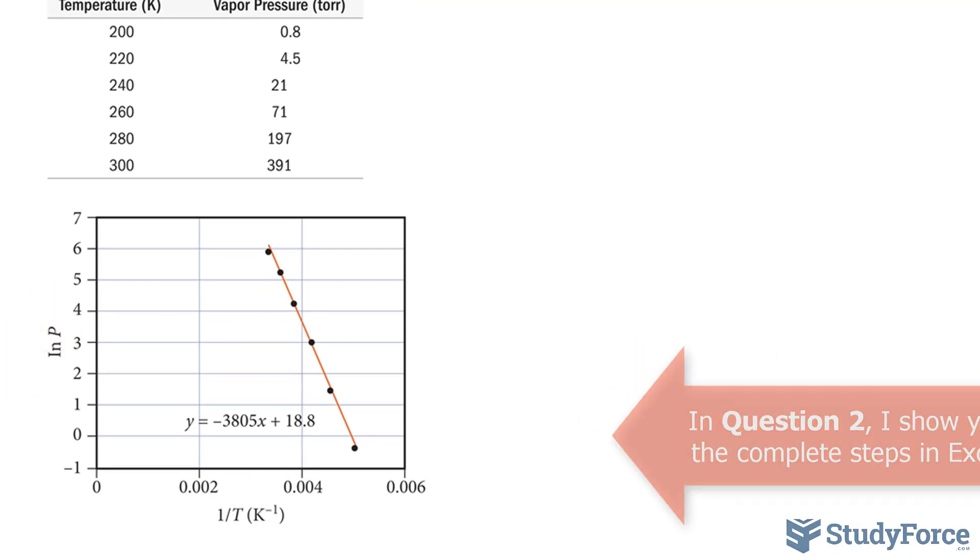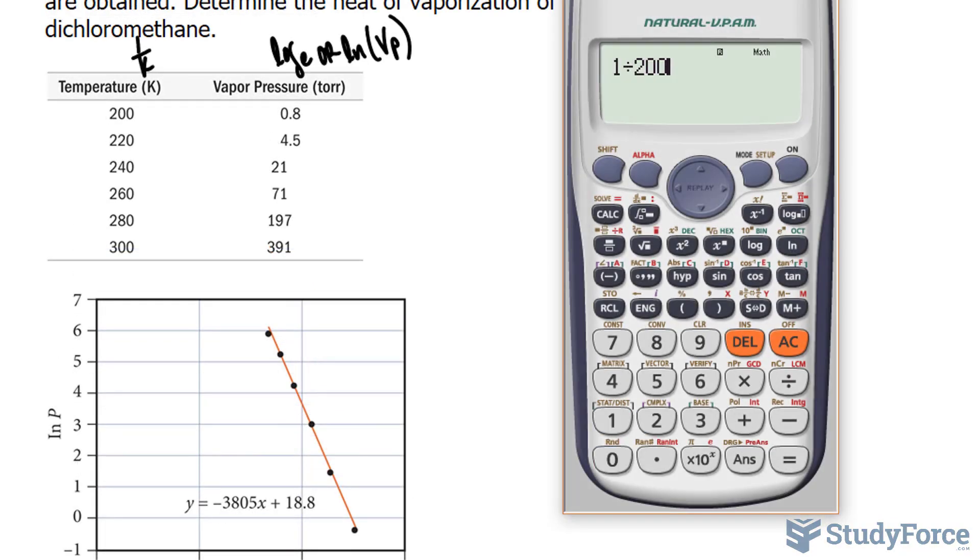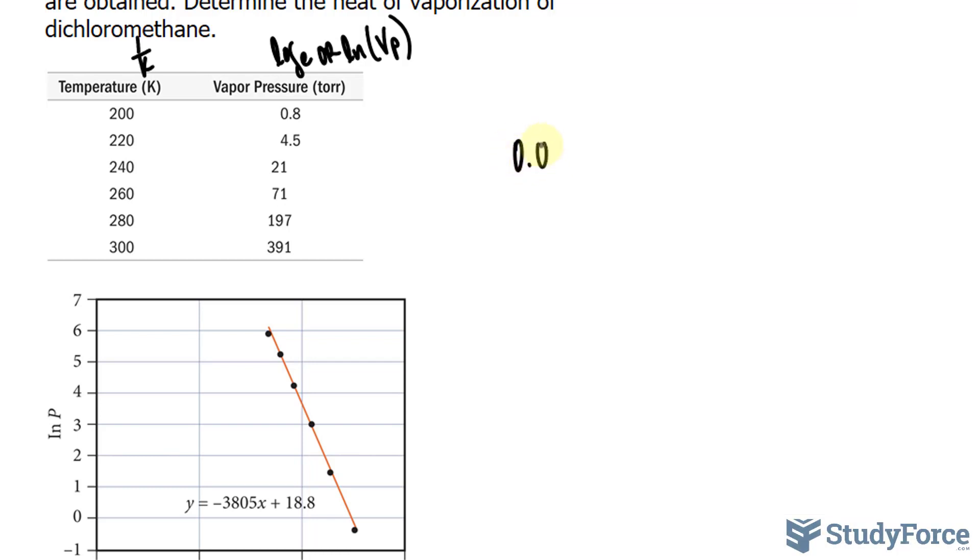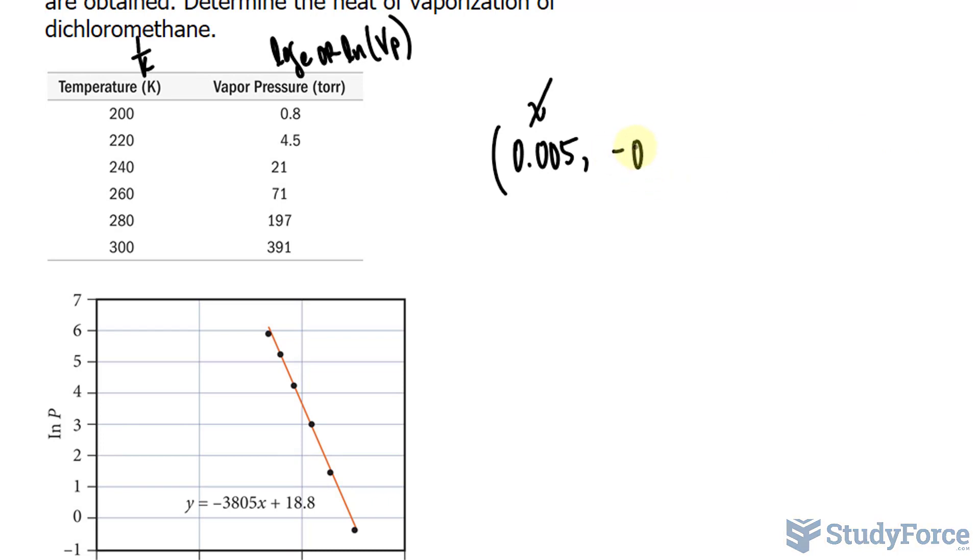Just to give you an idea, let's pretend that we took the inverse of 200. So I'll go 1 over 200 gives us approximately 0.005. So 0.005, that's the x-coordinate. And the y-coordinate, taking the natural log of that, you can use the function on your calculator. It gives you negative 0.223.